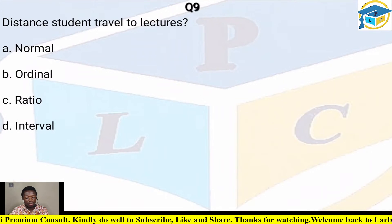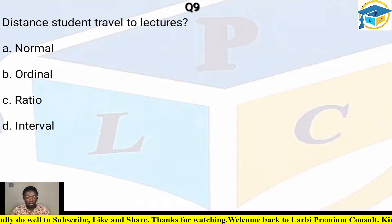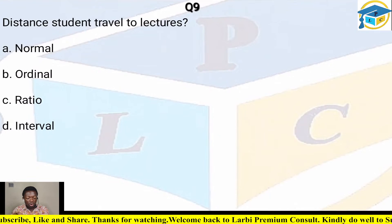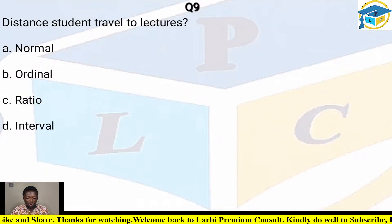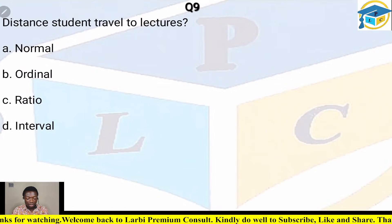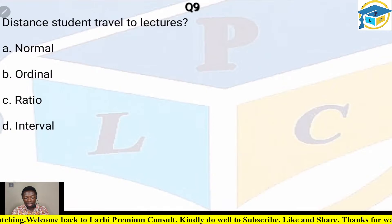Question nine: distance travelled to lectures — what level of measurement applies? The options include nominal, ordinal, ratio, and interval. Since we are talking about distance, the correct answer is interval — the interval scale of measurement is used for such data.